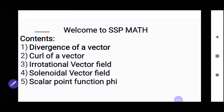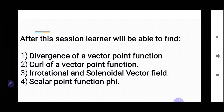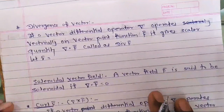Welcome to SSP Math. Today's contents are divergence of a vector, curl of a vector, irrotational vector field, solenoidal vector field, and scalar point function phi. After this session, the learner will be able to find divergence of a vector point function (del dot F̄), curl of a vector point function (del cross Ā), irrotational and solenoidal vector fields, and scalar point function phi.